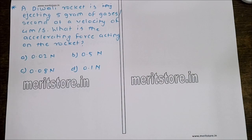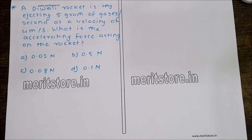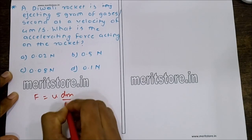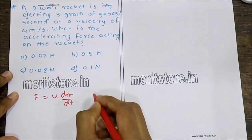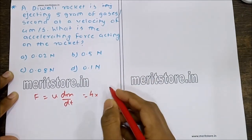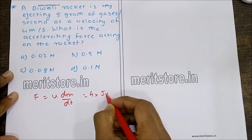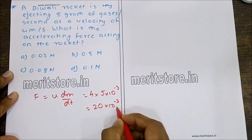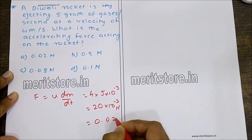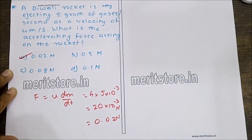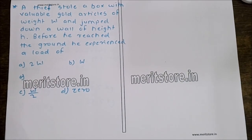A rocket ejects 5 grams of gas per second at 4 m/s. What is the accelerating force on the rocket? Thrust = U × DM/DT = 4 × 5×10⁻³ = 20×10⁻³ = 0.02 N. Hence option A is the correct answer.